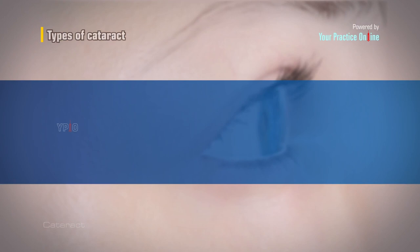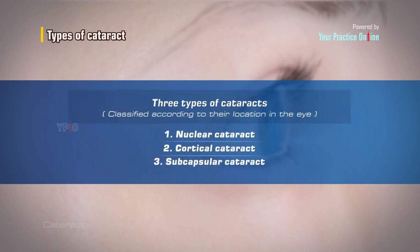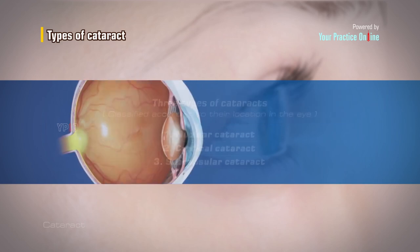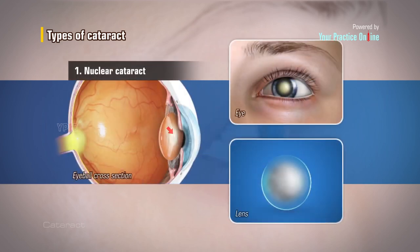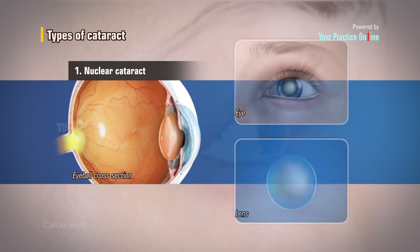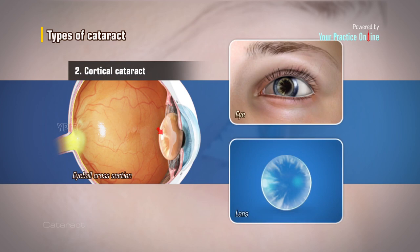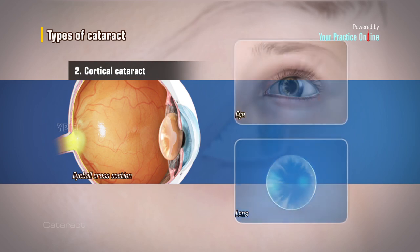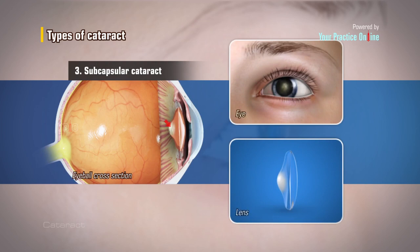There are three types of cataracts classified according to their location in the eye. Nuclear cataract is when the cloudiness is present in the center of the lens. With cortical cataract, the cloudiness is seen in the outer peripheral or cortical region of the lens. Subcapsular cataract occurs at the back of the lens capsule, and this type develops quicker and can appear more suddenly than nuclear and cortical cataract.